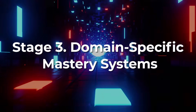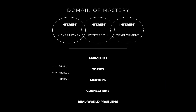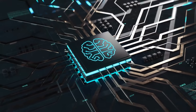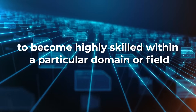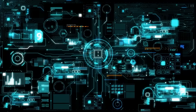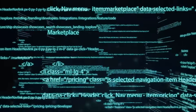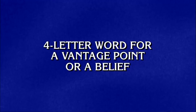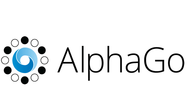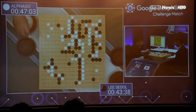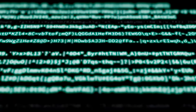Stage 3: Domain-Specific Mastery Systems. Moving beyond context-aware AI, we come to domain-specific mastery systems. This stage represents the AI's ability to not only comprehend and retain information, but to become highly skilled within a particular domain or field. These systems are not generalists — they're experts, fine-tuned to excel in a specific area. A perfect example is IBM's Watson, which was designed to excel at answering questions on the quiz show Jeopardy. Another instance is Google's DeepMind AlphaGo, which was trained specifically to master the complex board game Go, defeating world champions.